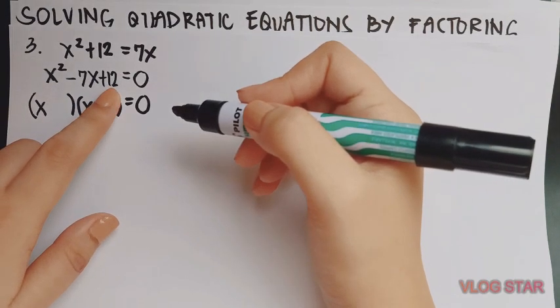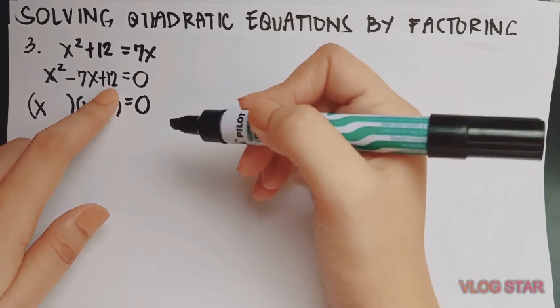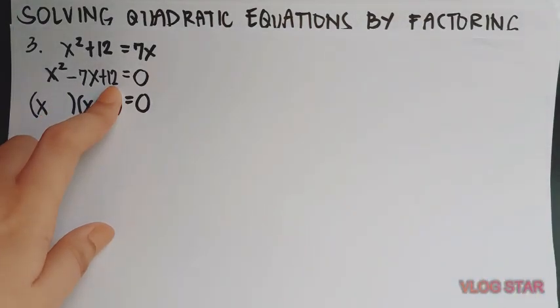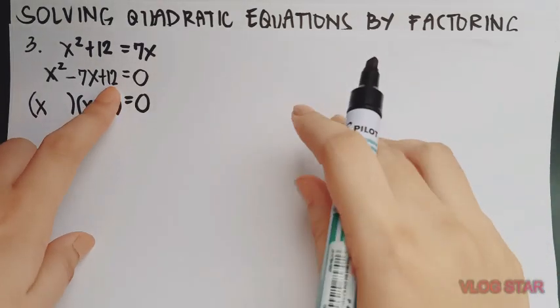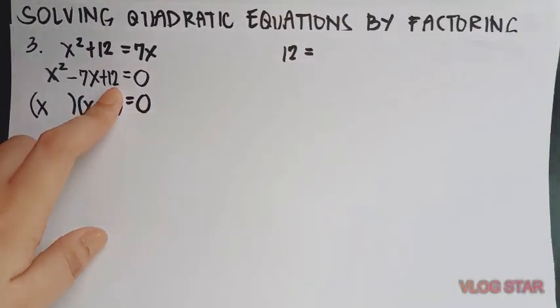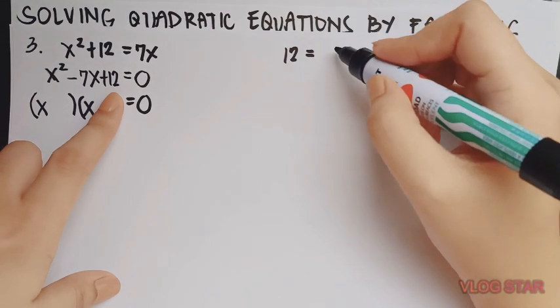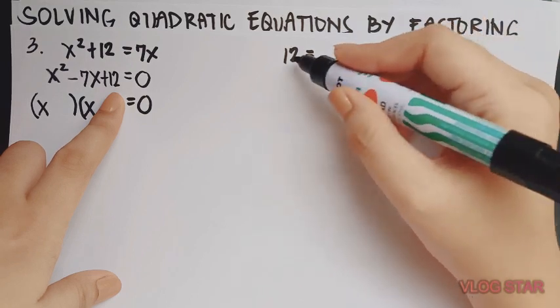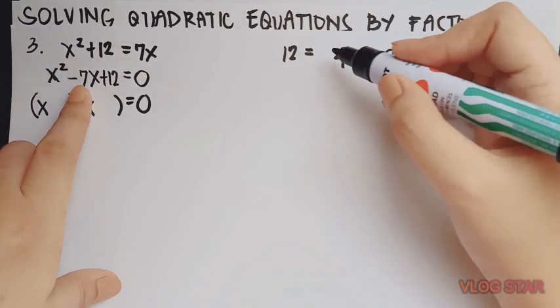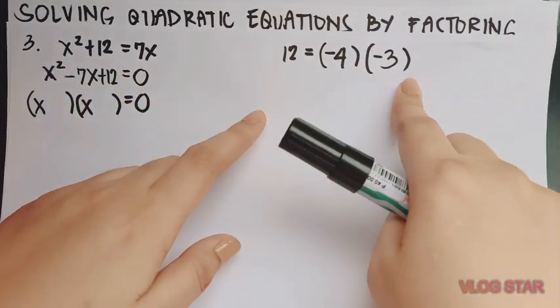Factors of 12 that will give us sum of negative 7. I have given an example a while ago where all of the factors are written down, but class, that might be time-consuming. So if you can do this mentally, that will be better. So if we're going to get the factors of 12, we can have 4 and 3, right? Since this is positive, but b is negative, so it means the factors should be negative. So therefore, the factors that we are looking for are negative 4 and negative 3.